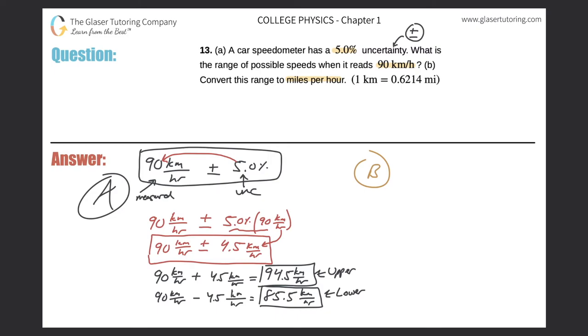So basically what I have to do is I'm looking to do two conversions, right? I have to convert this value here, the upper value to miles per hour, and then convert the lower value to miles per hour. Okay, so let's do that.